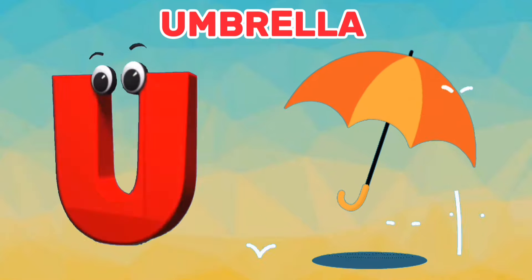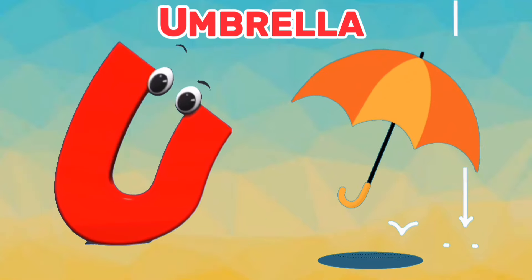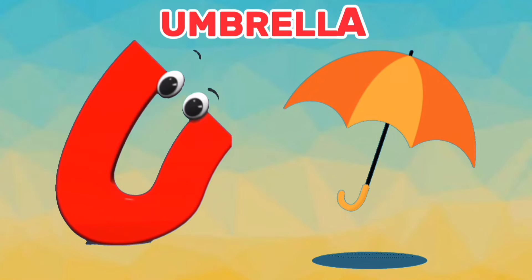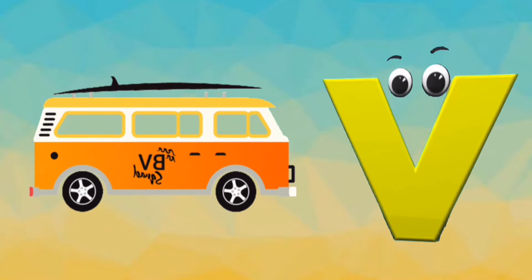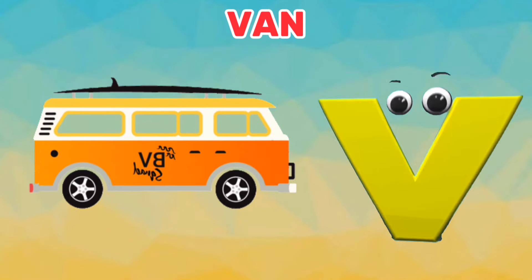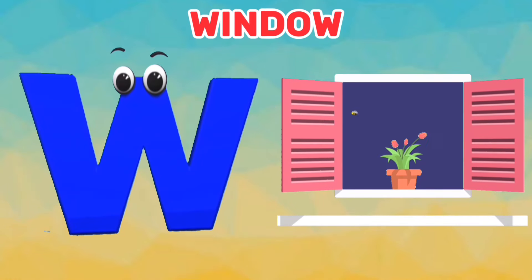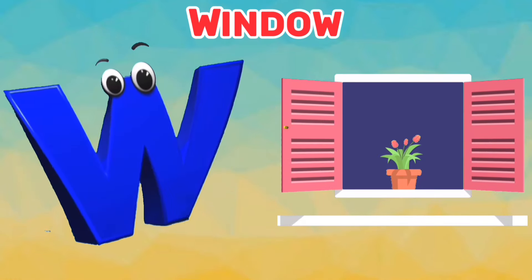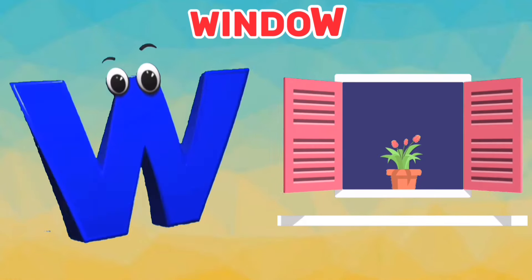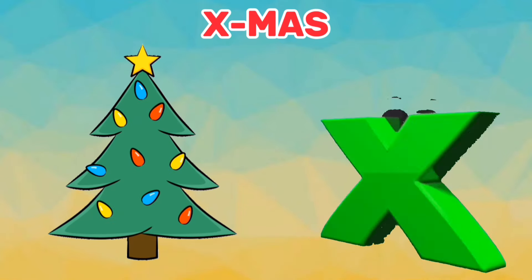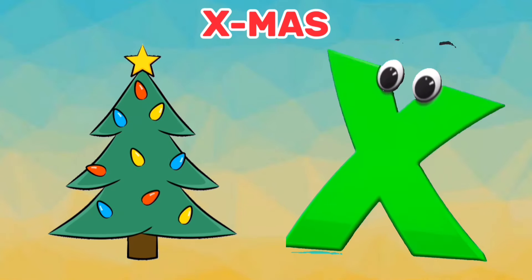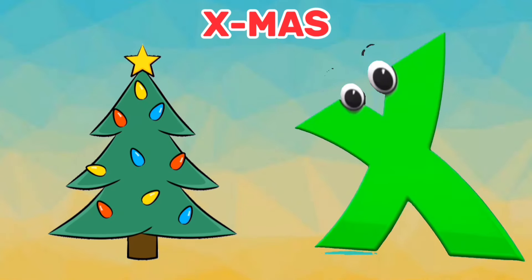U is for Umbrella. U. Umbrella. V is for Van. V. Van. W is for Window. W. Window. X is for Xmas. X. Xmas.